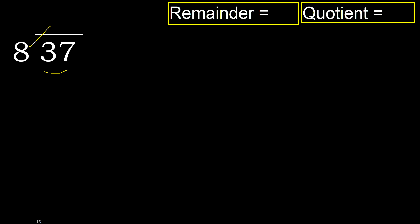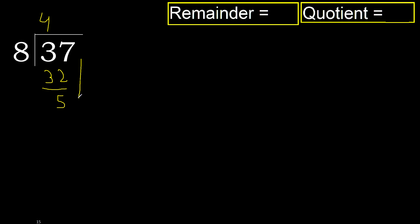8 multiplied by 5 is greater, multiply by 4. 32 is not greater. Subtract 5. There is no number remaining, therefore finish it.